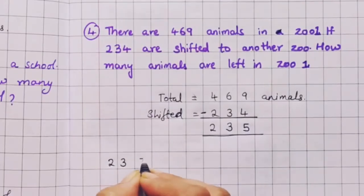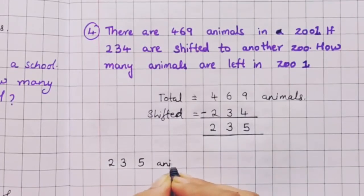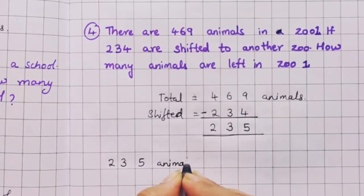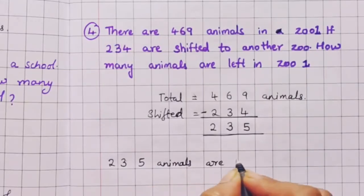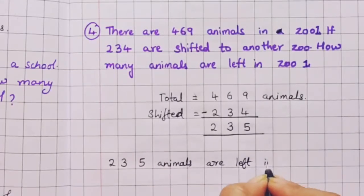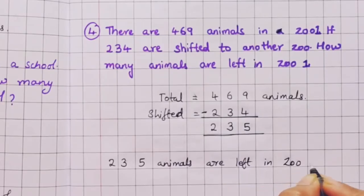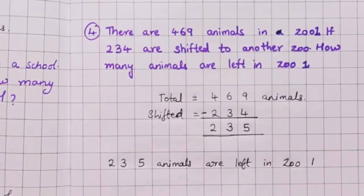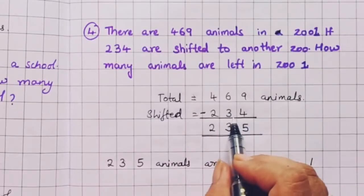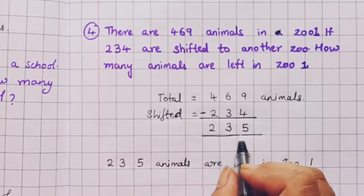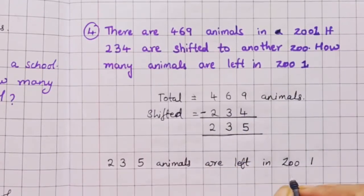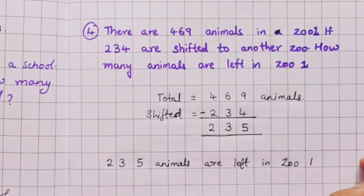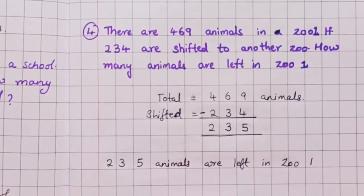So 235 animals are left in zoo 1. After shifting 234 animals, 235 animals are left in zoo 1. If you enjoyed this video, do give it a like, share this video, and subscribe to our channel. Bye.